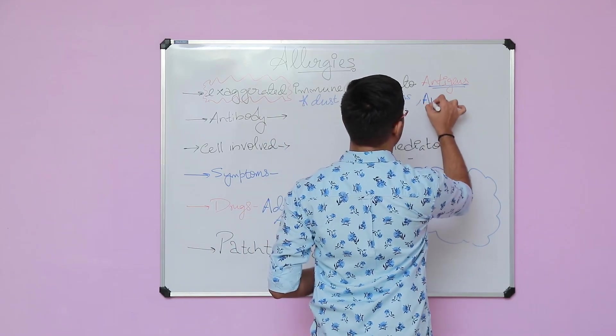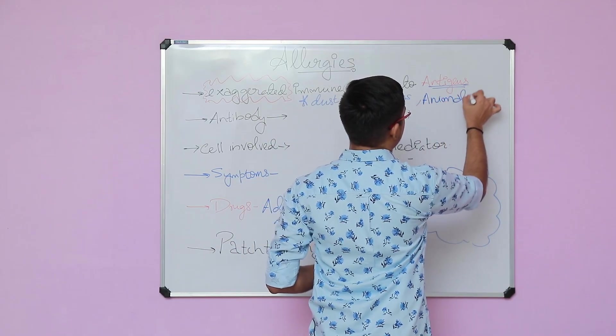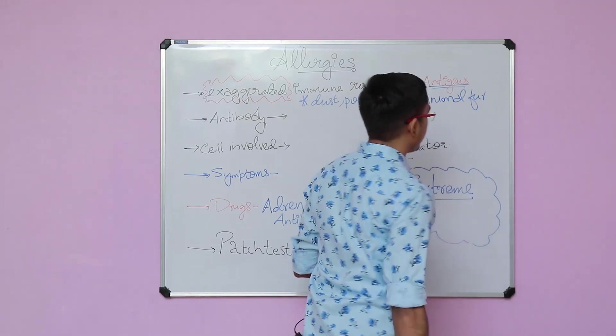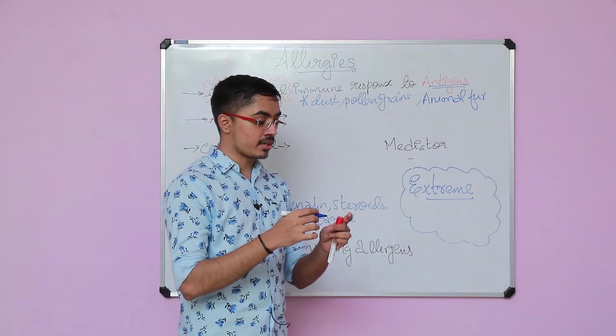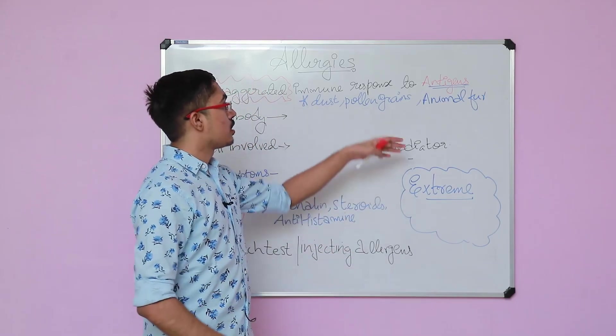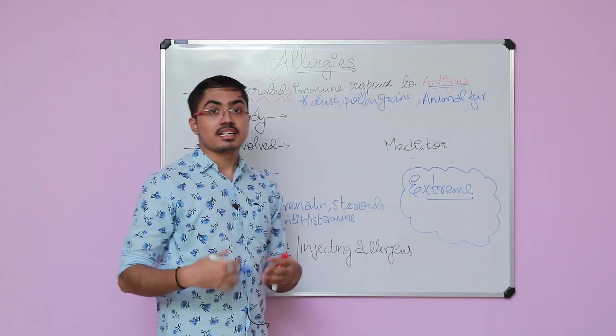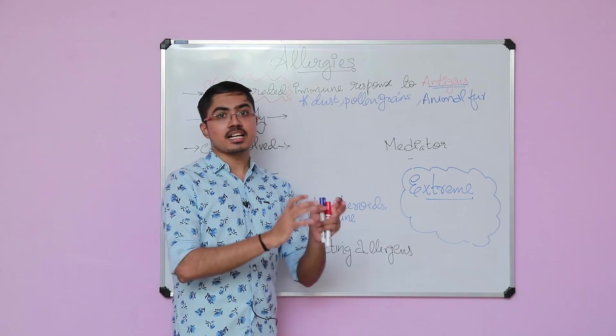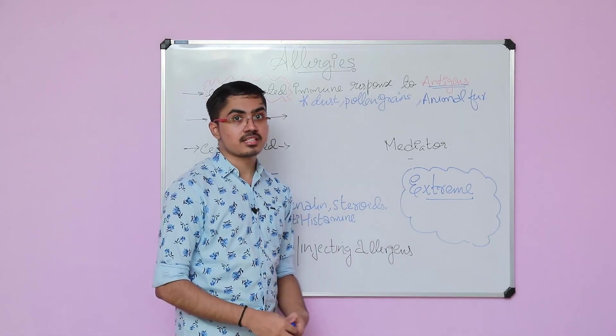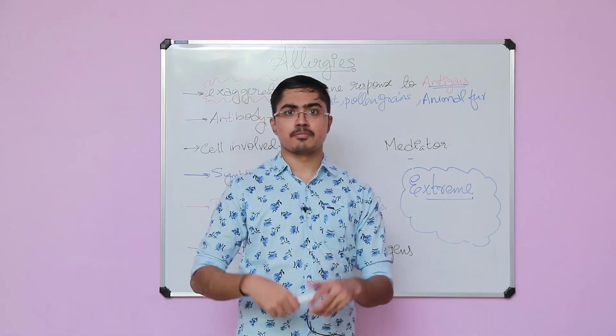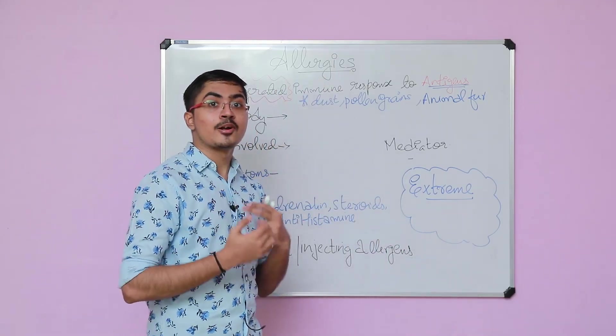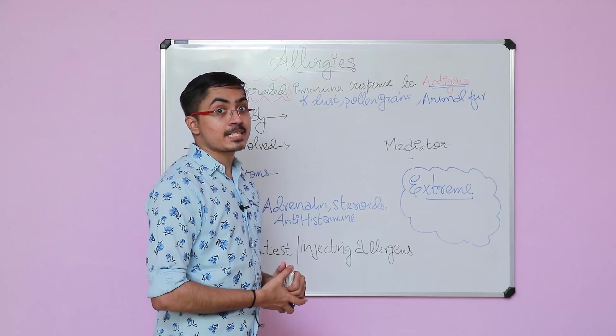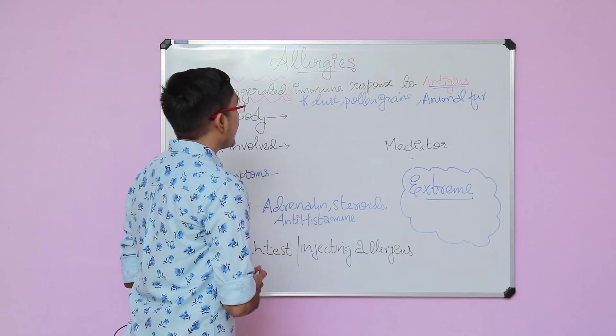And even animal fur. Let's say you have a pet animal at home and it is shedding a lot of fur on its body. That can cause a lot of immune response, that is allergy to it. Allergy is an exaggerated immune response. The person becomes aware because he will have a lot of distressing symptoms once exposed to these kinds of allergens.